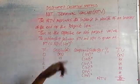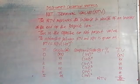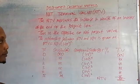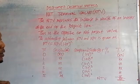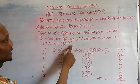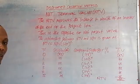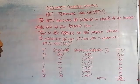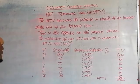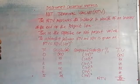This is the compounding. We are going to do compounding under NTV — that is under net terminal value. While under net present value, we are discounting.